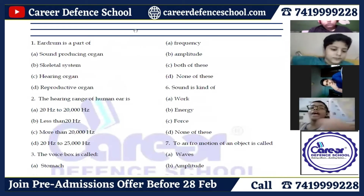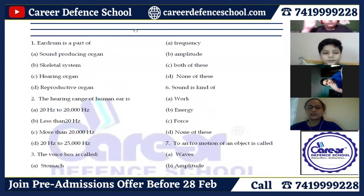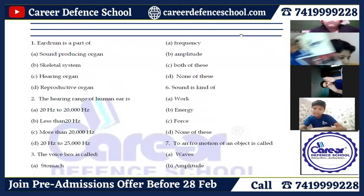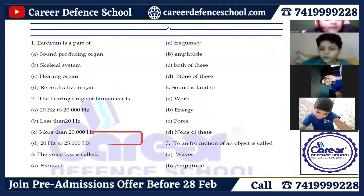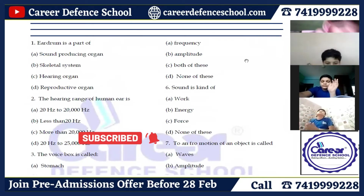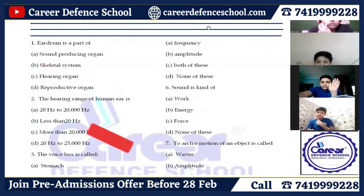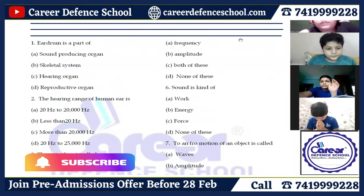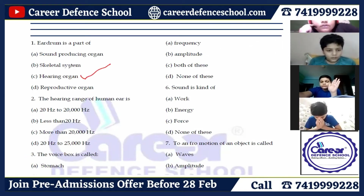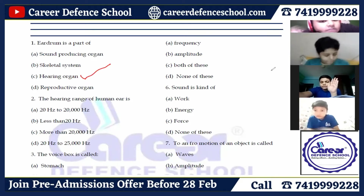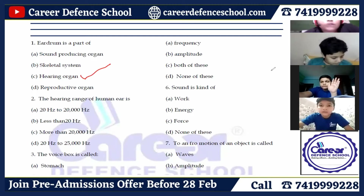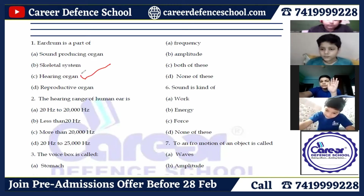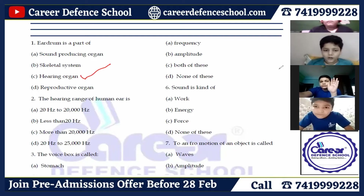Question number one: the eardrum is a part of which organ — sound producing organ, skeletal system, hearing organ, or reproductive organ? The eardrum is the part of the ear which helps collect voice and vibrate sounds. Its answer will be C, hearing organ.